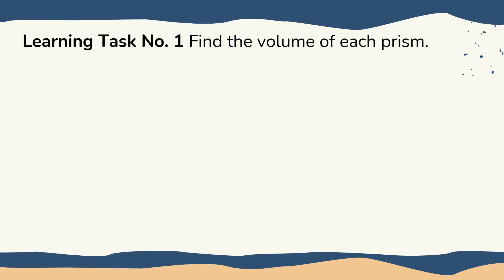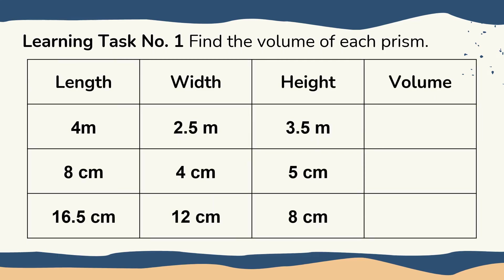So from Learning Task 1, find the volume of each prism. So prism ang hinihingi — length times width times height yun. So ang given natin: length, width, and height. We will find the volume — we will just multiply. 4 times 2.5 times 3.5 meters is equivalent to 35 cubic meters. Take note, dahil meter yan, so meter ang gagamitin natin. Kayo na yung magsagot ng numbers 2 and 3.